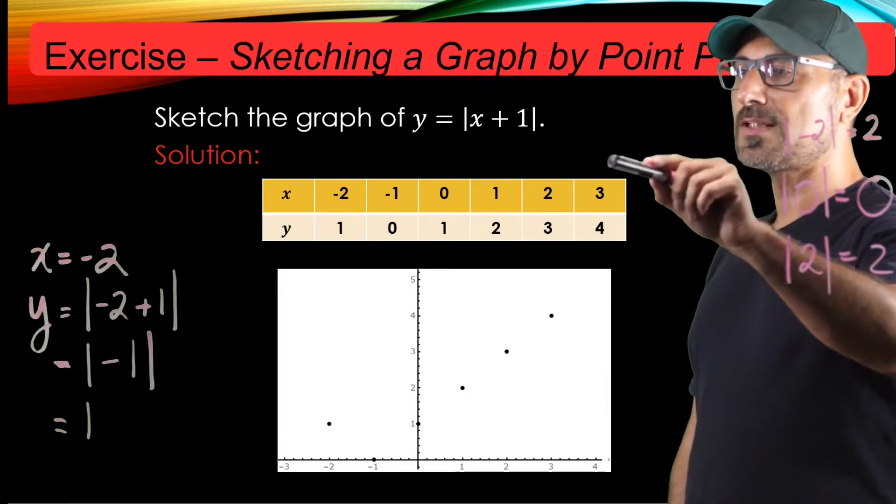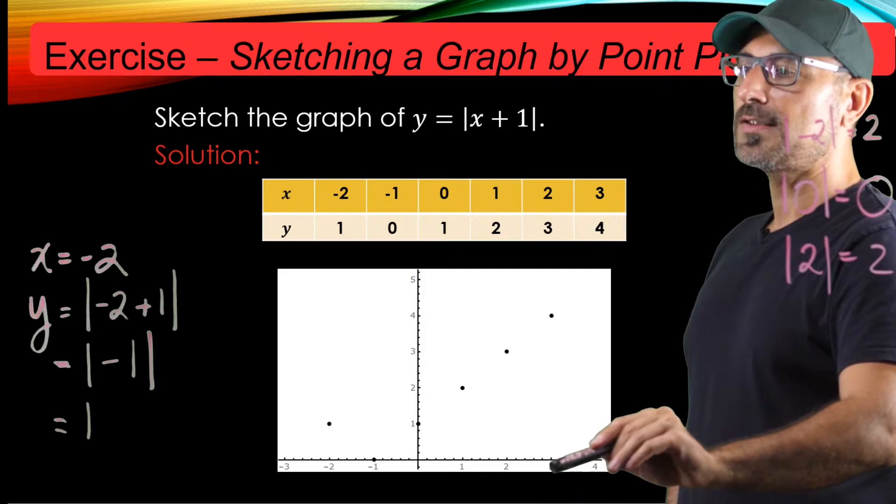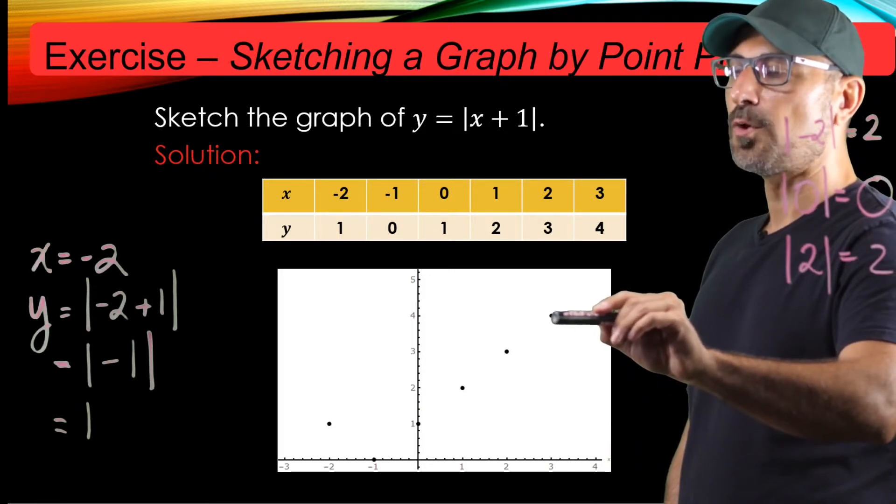And for example, for this one, 3 and 4: x is 3, y is 4. Here we go, I have x equals 3 and y equals 4. I mark this point.